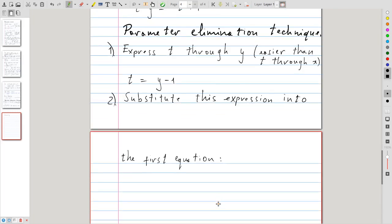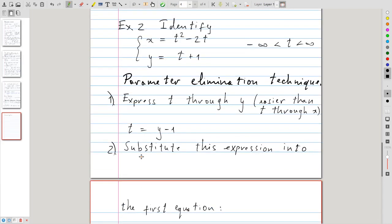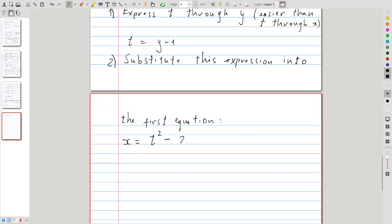Which results in the following. We have that x equals t squared minus 2t. But then t in terms of y is given by y minus 1. So we have (y minus 1) squared minus 2 times (y minus 1). So if we go ahead and simplify this expression in the right hand side, we will have y squared minus 2y plus 1 minus, then we will distribute this product over here, minus 2y plus 2, because minus 2 times minus 1 gives us plus 2. And so simplifying this gives us y squared minus 4y plus 3. And so this is the dependence of x on y.